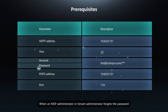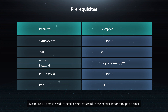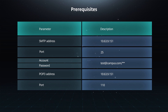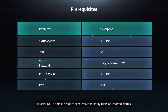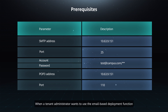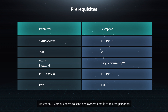When an MSP administrator or tenant administrator forgets the password, iMaster NCE Campus needs to send a reset password to the administrator through an email. After a tenant administrator performs alarm settings on iMaster NCE Campus, it needs to send emails to notify users of reported alarms. When a tenant administrator wants to use the email-based development function, iMaster NCE Campus needs to send development emails to related personnel.